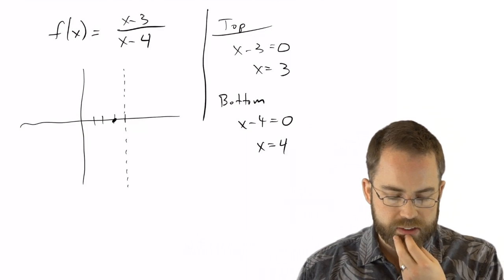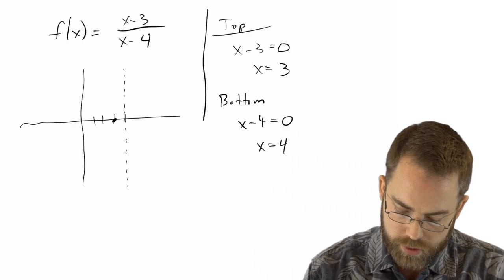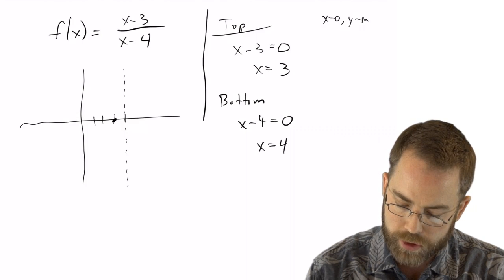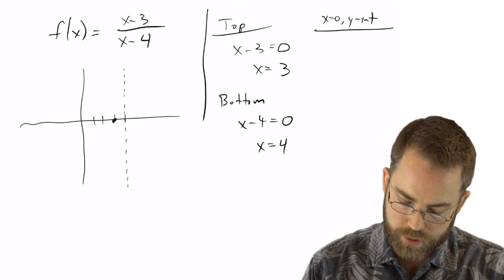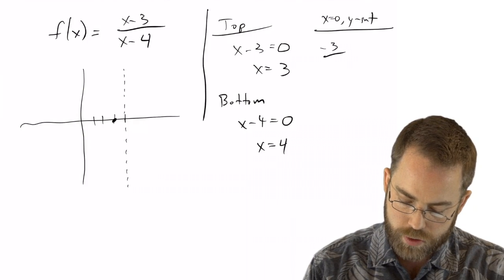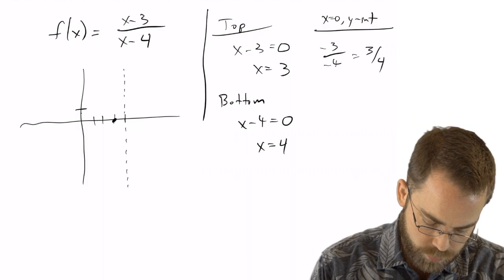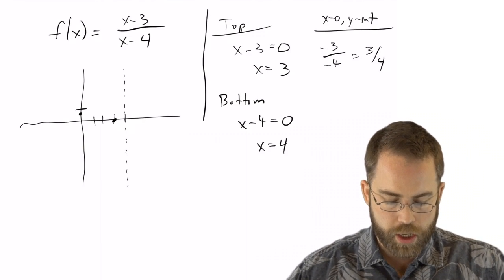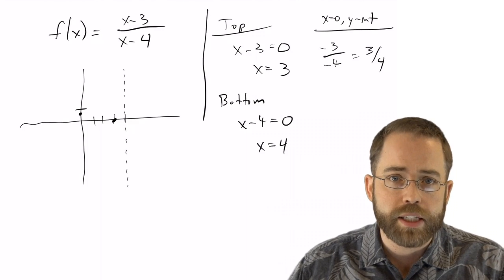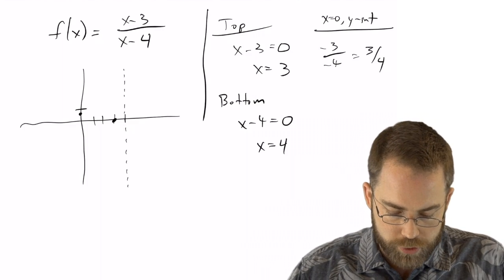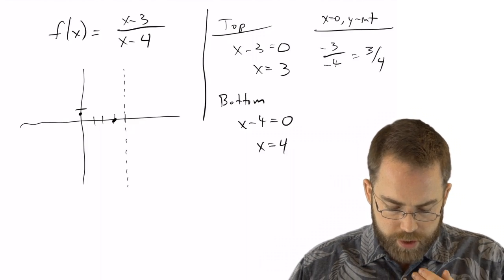The graph is starting to come together. I also want to know the y-intercept — when x equals zero. If I plug in zero, I get negative three over negative four, which is three-fourths. So before even x=1, there's going to be another point on my graph. I picked that one because plugging in zero is the easiest calculation — you can just ignore all the terms with x in them.